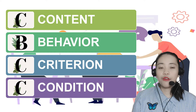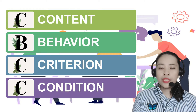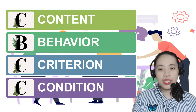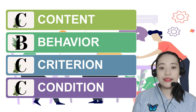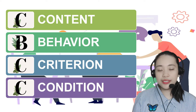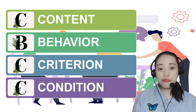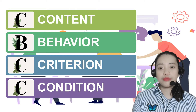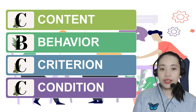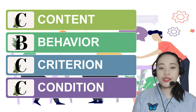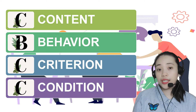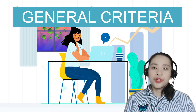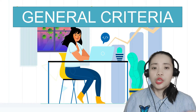Content: for the objectives, what contents should students learn? Behavior: what will students do to indicate that they have learned? Third, criterion: what level of performance should the students have to master the behavior? And fourth, condition: under what circumstances should students need to work in order to master the behavior?